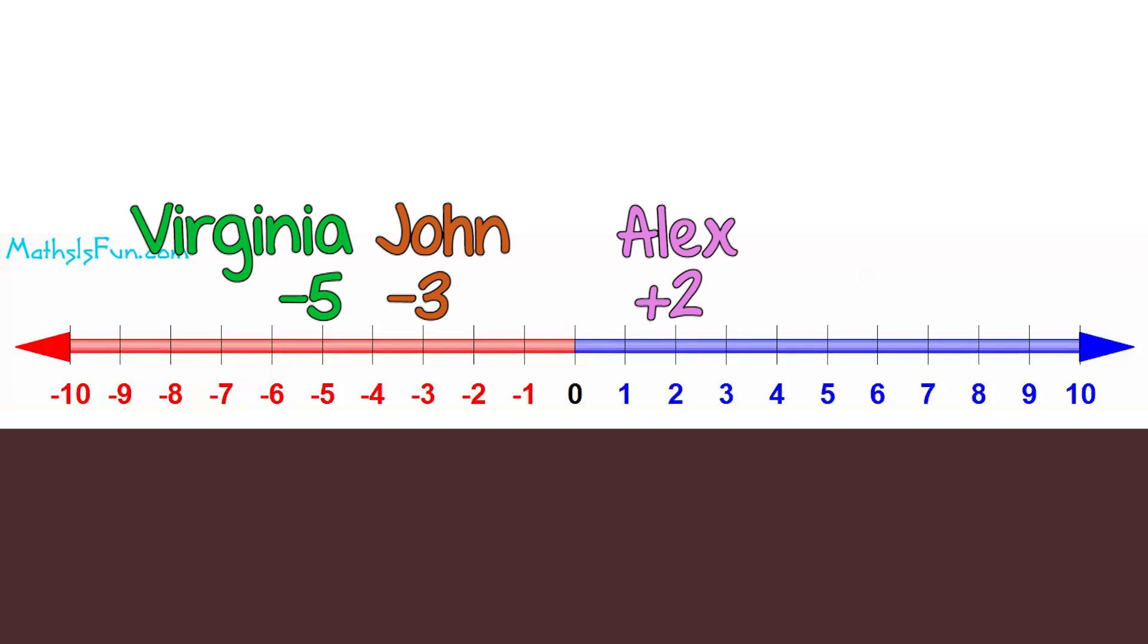Now it is easy to see that Virginia is poorer than John. John is poorer than Alex and Alex is the richest.